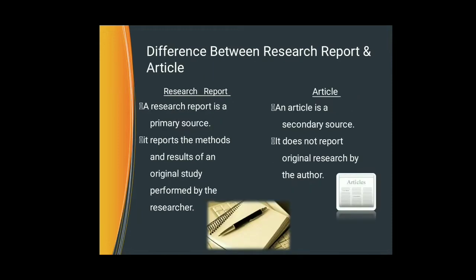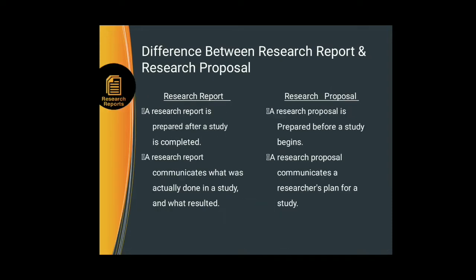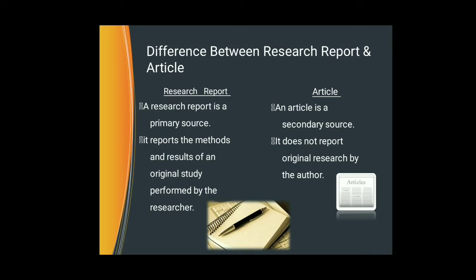Now the difference between research reports and research proposals, and between research reports and research articles. The first difference: a research report is prepared after a study is completed, whereas a research proposal is prepared before a study begins. A research report communicates what was actually done in a study and what resulted, while a research proposal communicates a researcher's plan for a study. Regarding the difference between a research report and a research article: a research report is a primary source, and a research article is a secondary source. An article does not report original research by the author.